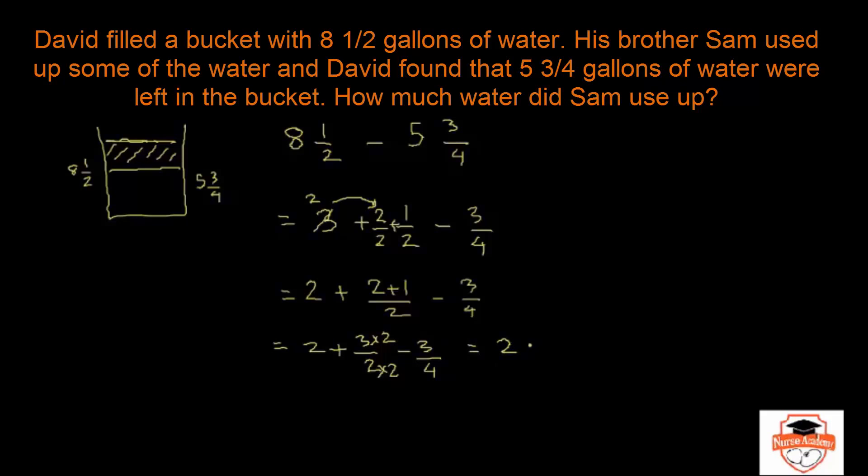You have a 2 plus 6/4 minus 3/4, so that's equal to 2 plus 6 minus 3 over 4. So that's 2 plus 6 minus 3 is 3, 3/4, which is 2 wholes and 3/4 of a gallon.